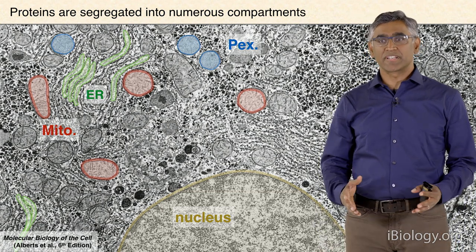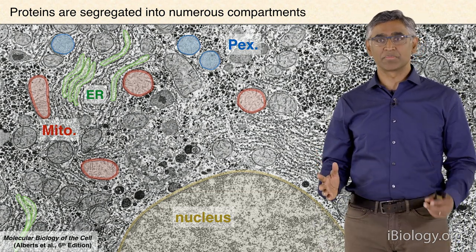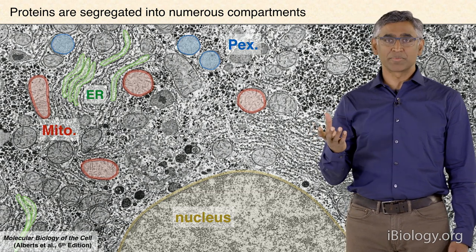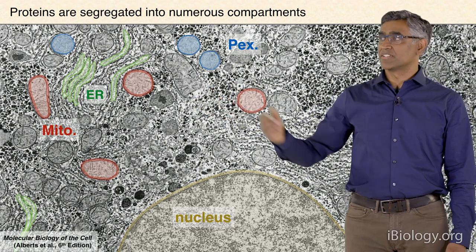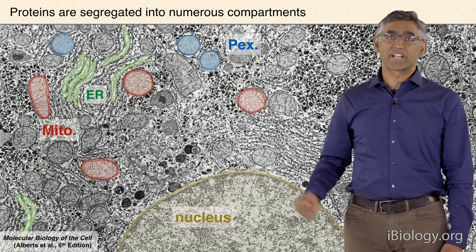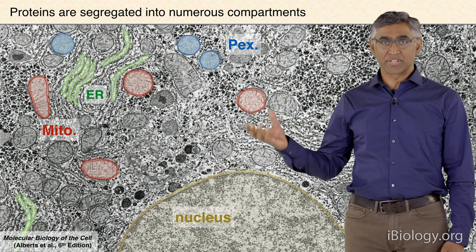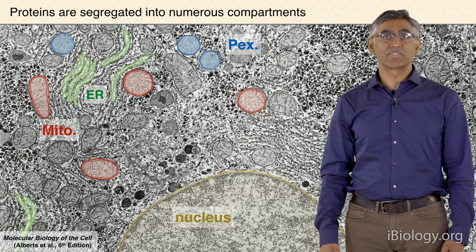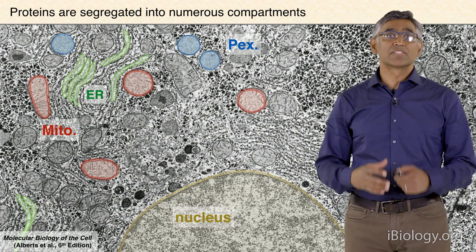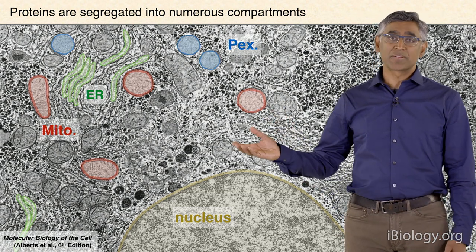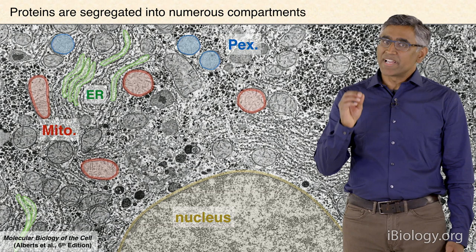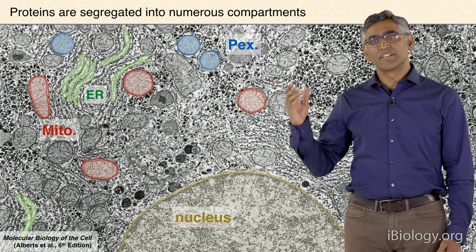What we learned in the first talk is some of the very basic principles of how this is accomplished. In short, proteins typically have signal sequences or other elements that are specifically recognized by machinery dedicated to different organelles. For example, proteins that go to the endoplasmic reticulum have one set of machinery; proteins for mitochondria have another. These machinery ensure recognition of these signals and get the proteins to the right part of the cell.